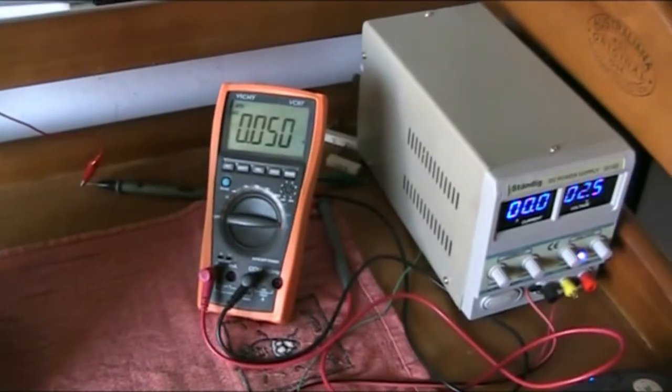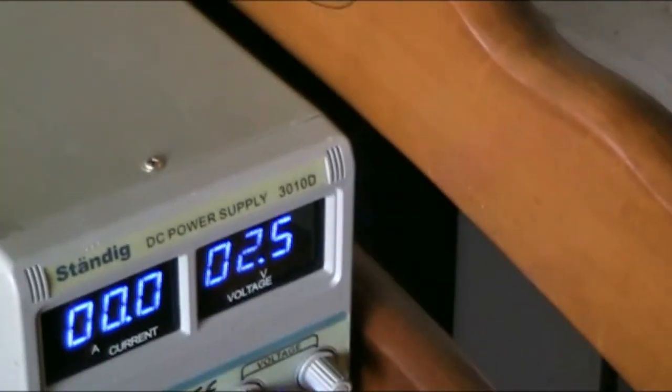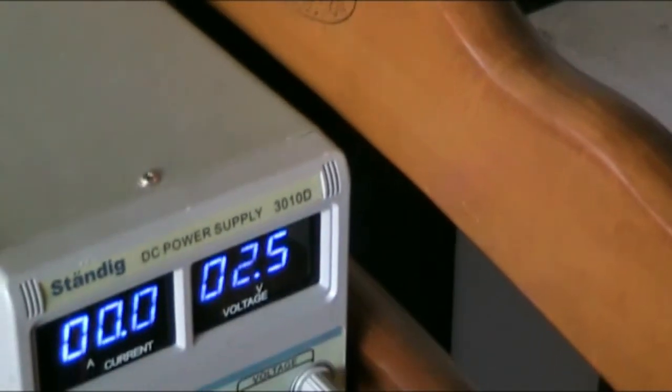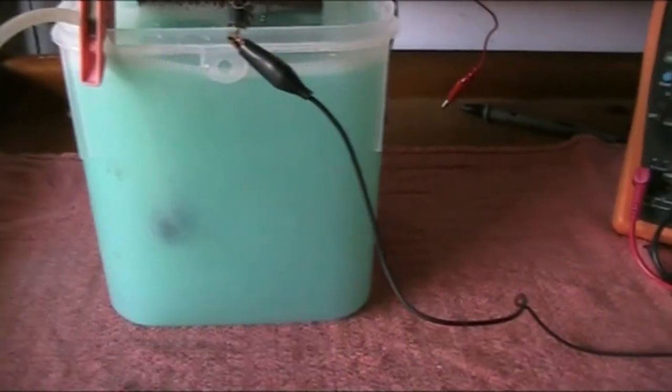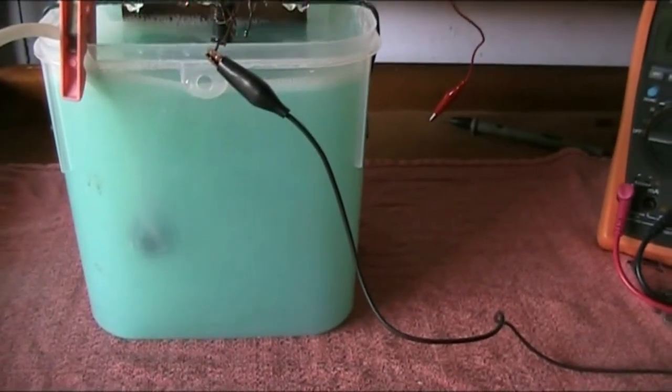Here's another example running at 50 milliamps. I'm using a 10 ohm resistor and 2.5 volts at the power supply. If we look at the GANS production, it's a bit difficult to see because the solution is a bit cloudy. But one thing you can notice definitely is that the color is distinctly more green than the previous 10 milliamp scenario.